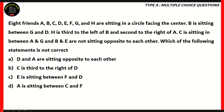Next question. Eight friends — A, B, C, D, E, F, G, and H — are sitting in a circle facing the centre. B is sitting between G and D; H is third to the left of B and second to the right of A; C is sitting between A and G; and B and E are not sitting opposite to each other. Which of the following statements is not correct? A: D and A are sitting opposite to each other. B: C is third to the right of D. C: E is sitting between F and D. D: A is sitting between C and F.